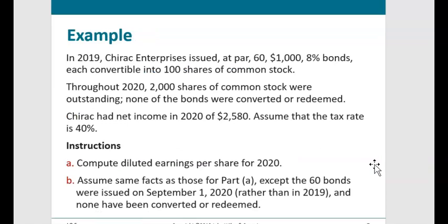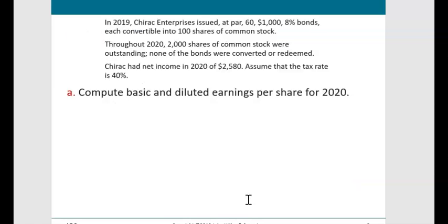Let's look at an example of convertible bonds. In 2019, Chirac Enterprises issued at par 60 bonds with $1,000 face value and an 8% stated interest rate. Each bond is convertible into 100 shares of common stock. In 2020, 2,000 shares of common stock were outstanding, none of the bonds were converted, net income was $2,580, and the tax rate is 40%. We'll calculate diluted EPS for 2020, first assuming bonds were outstanding all year.